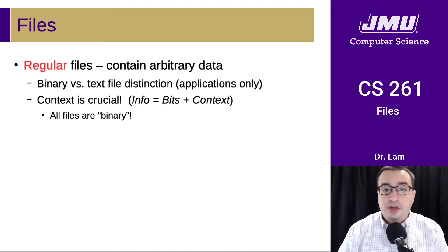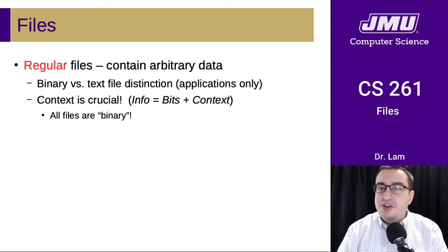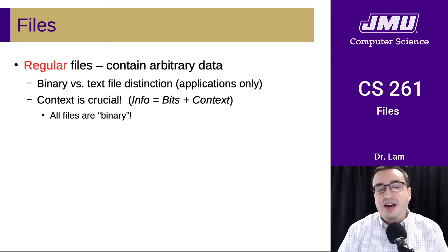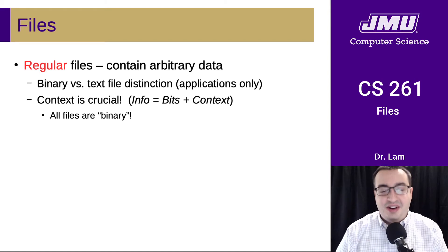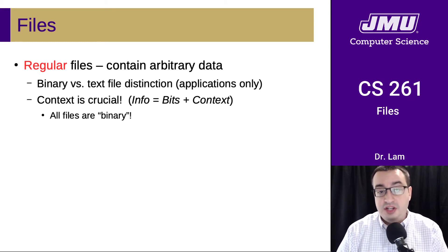Regular files contain any sort of arbitrary data that the user or program might want to store. We do sometimes make a distinction between binary versus text files, but this is an application-only distinction. All files are binary — they're all stored on disk and in memory as binary bits. A text file is just a binary file that we have made the decision to interpret as being in some sort of character encoding.